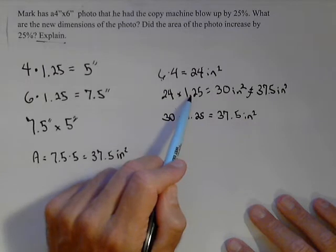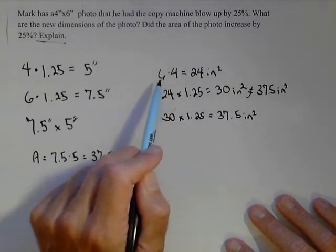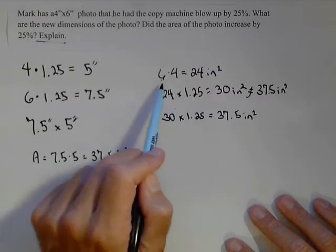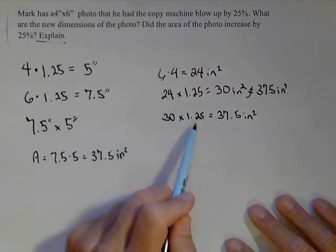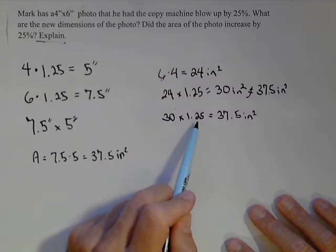When we did 6 times 4 times 1.25, it was as if we were only multiplying one of those sides by the 1.25, or if we were only increasing one side by 25%. By doing it again, now it's as if we're increasing both sides by 25%.